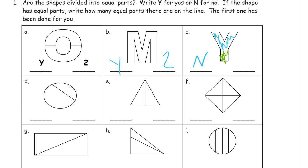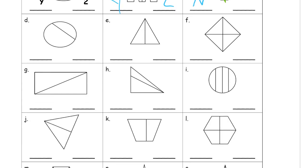If it has equal parts, write how many equal parts there are on the line. Since it's a no, I'm not going to write any number there. And this looks like an oval, and this piece here is way bigger than the other piece. You don't have to shade your pieces in like I am. That piece is way bigger than the other piece, so that's a no.